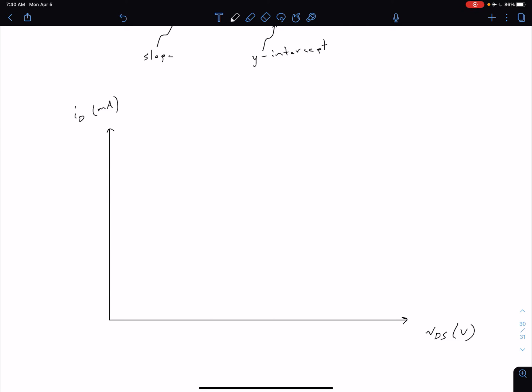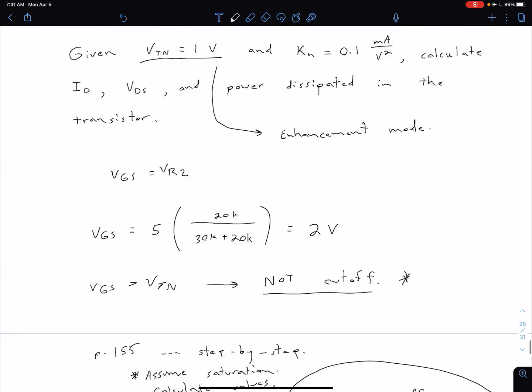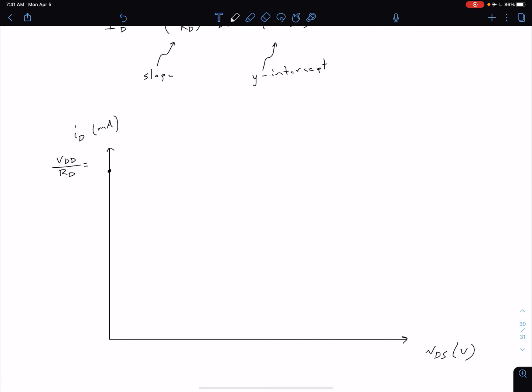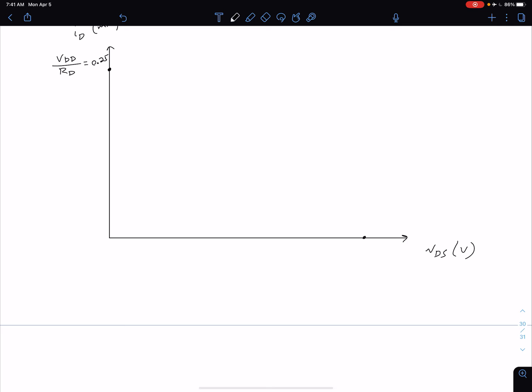What we're saying is that we had some VDD over RD, which is going to be our Y-intercept over here. We had 5 volts and a 20kΩ resistor, so that value ends up being 0.25 milliamps. That would be the maximum current we could have. We can also find the intercept with our voltage axis just by setting our ID equal to 0. If our ID is set equal to 0, our VDS is just going to be equal to VDD. So our other point over here is going to be equal to VDD, which in the previous example was 5 volts.